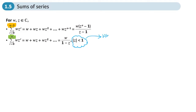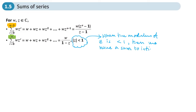So when the modulus of z is less than one, we have a sum to infinity. Just like with a geometric series, you only have a sum to infinity when the modulus of the common ratio is less than one. This is something similar — that condition must be met for the sum to infinity to have a limit.